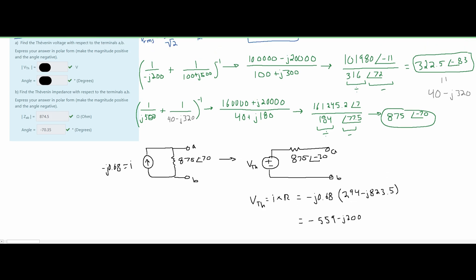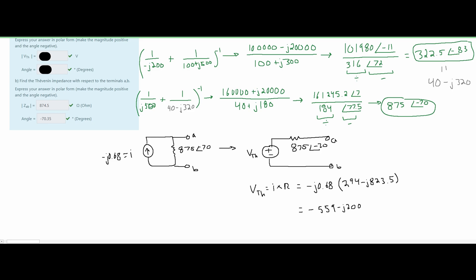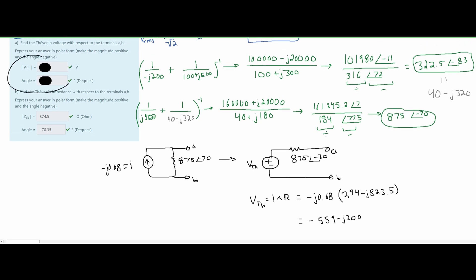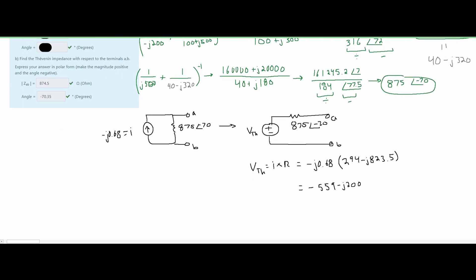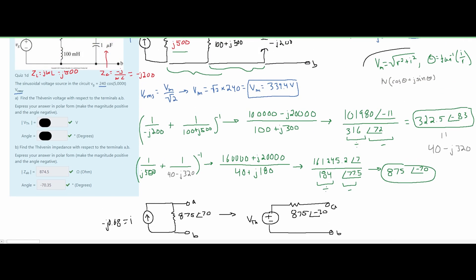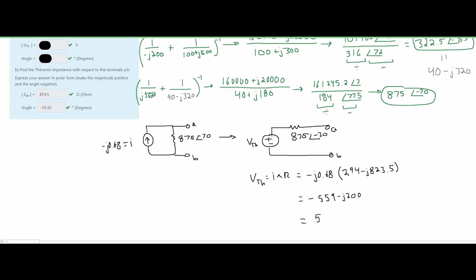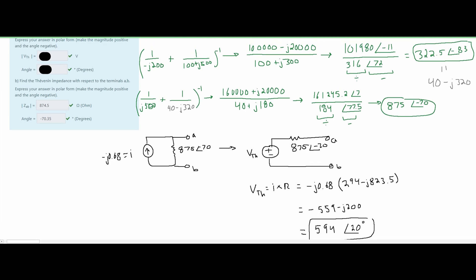Converting the impedance to rectangular form and multiplying by the current gives us intermediate rectangular values. Converting that result from rectangular to polar using our standard formulas, we initially get approximately 594 at an angle of 20°. However, checking the actual answer, V_TH ≈ 594 ∠ −160°, so the 20° is not correct.